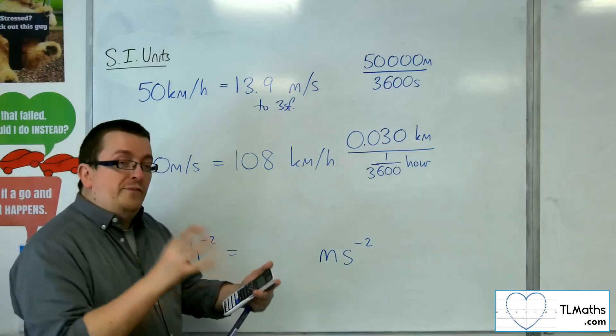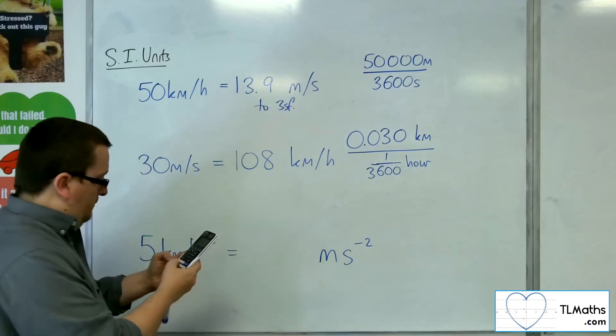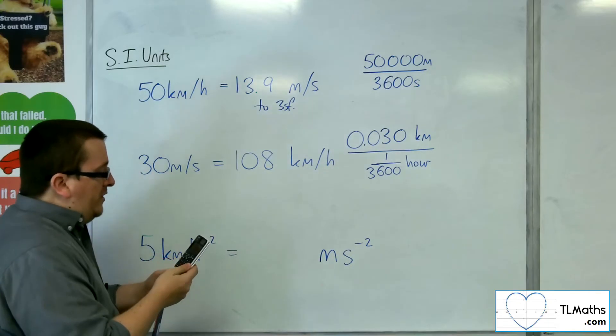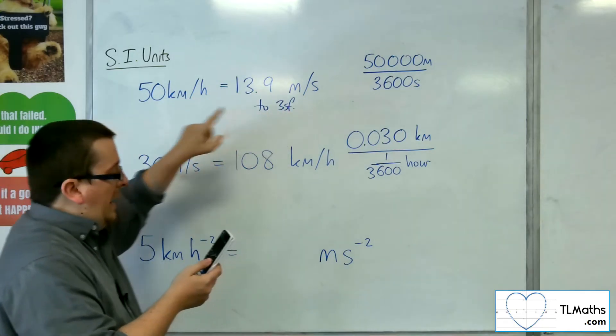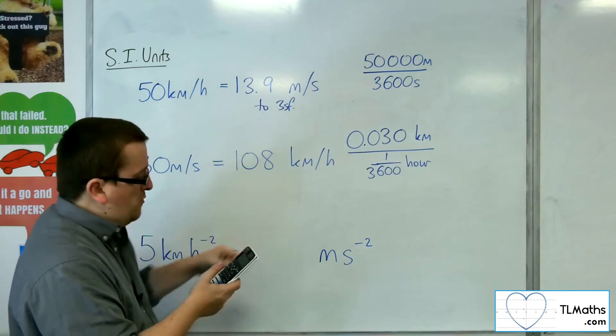So actually, if you go back to velocity, that's the one we want. So we go to velocity, and you'll see there are two options: kilometres per hour to metres per second, and metres per second to kilometres per hour.